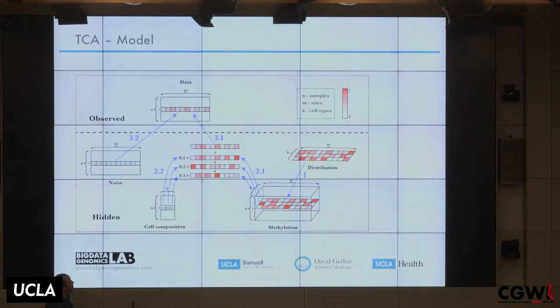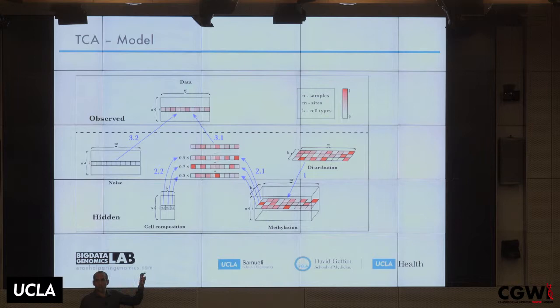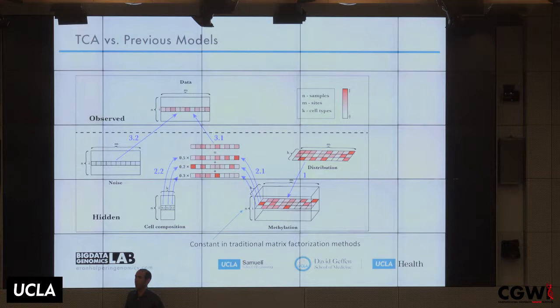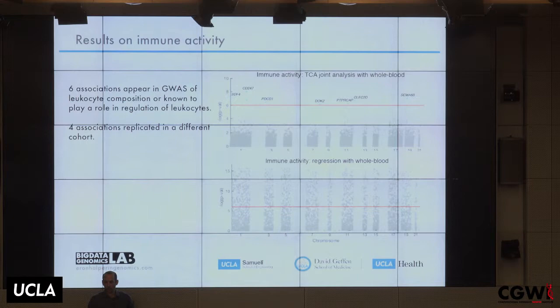The TCA model assumes noise comes from one distribution and cell composition from another, then adds them together. The key difference from previous methods is that we assume the Z matrix — the cell-type methylation profiles — is itself drawn from a distribution, specifically a normal distribution, varying across individuals. Previous methods assumed Z was constant — that every individual has the same methylation level for a given position and cell type.